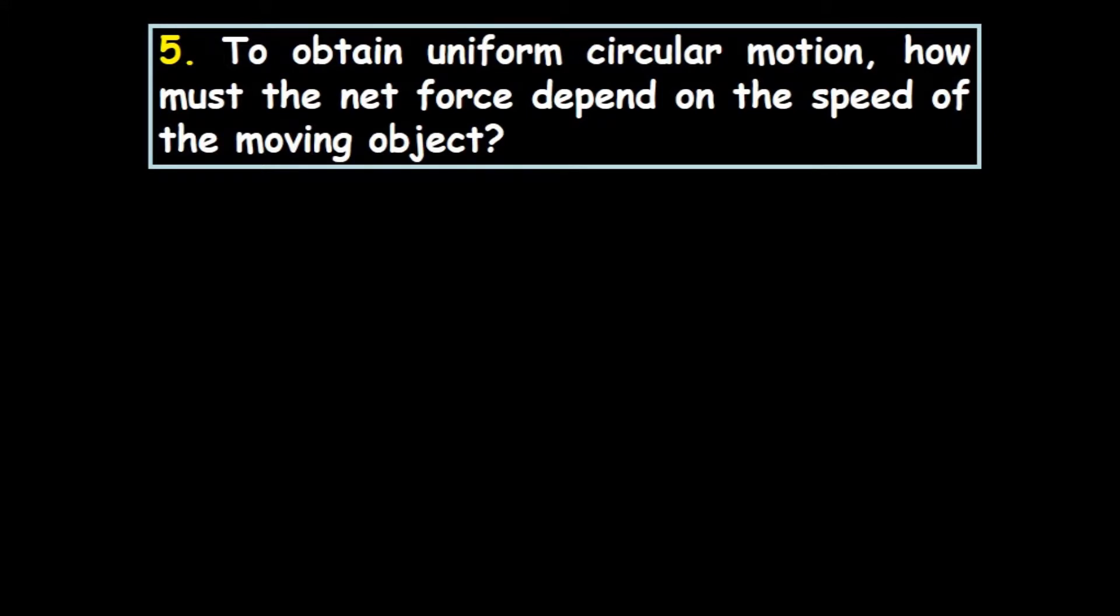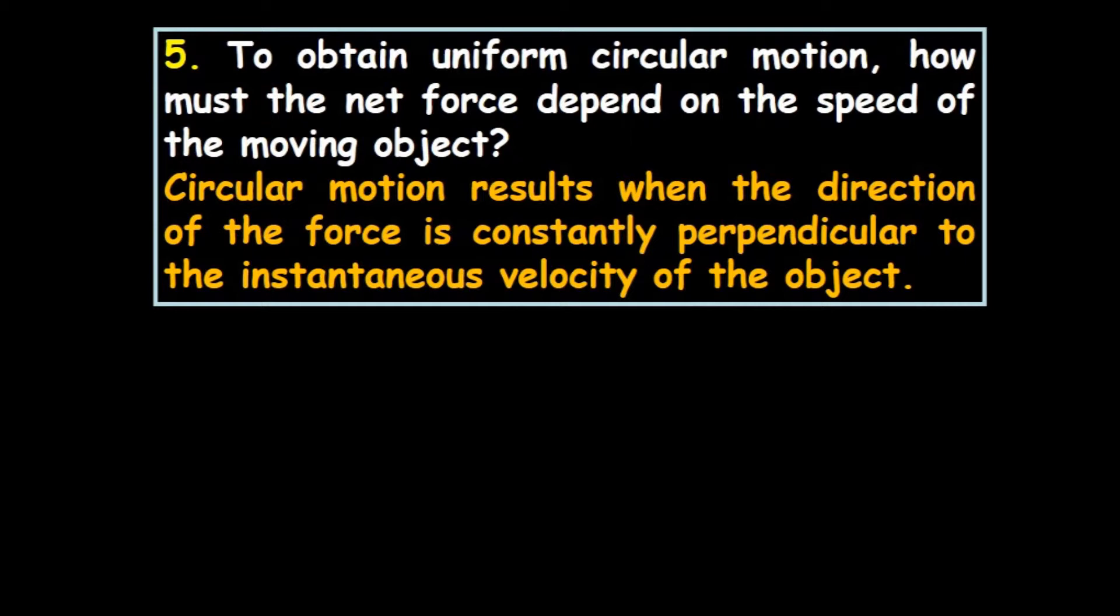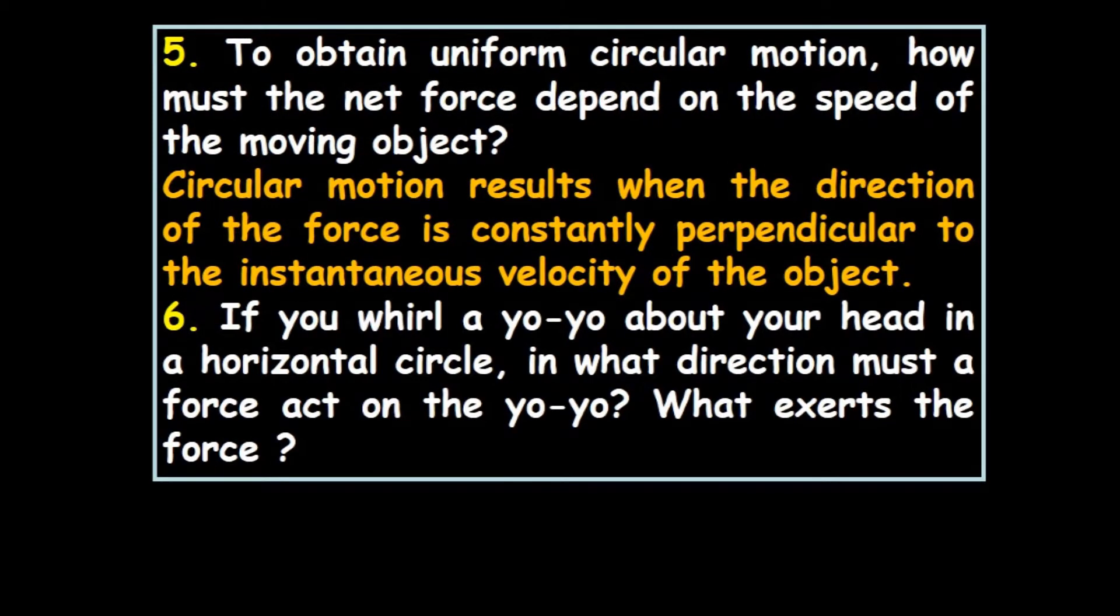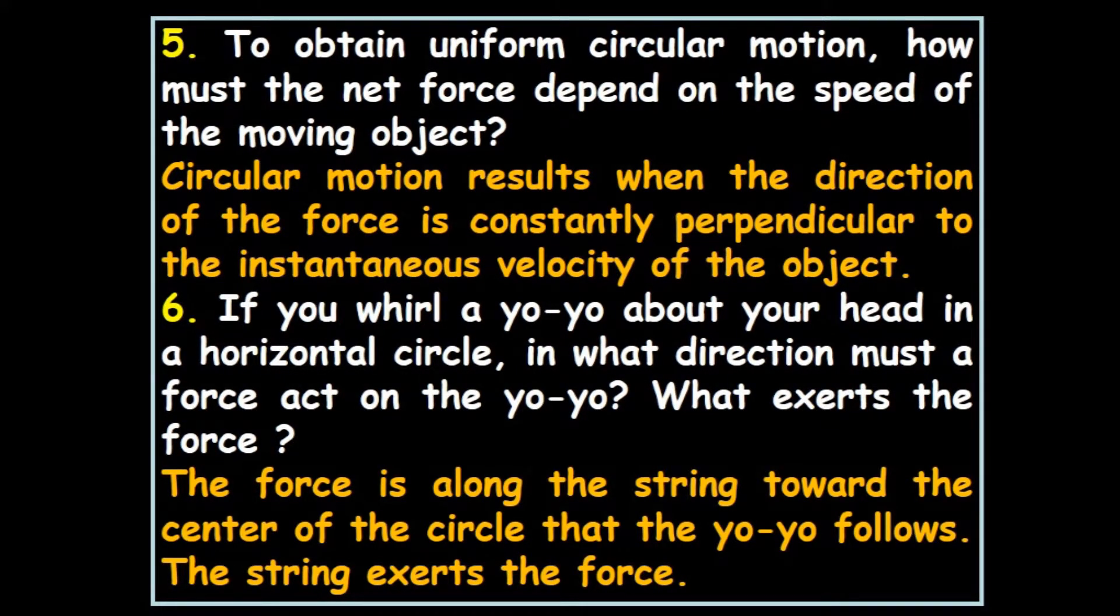To obtain uniform circular motion, how must the net force depend on the speed of the moving object? Circular motion results when the direction of the force is constantly perpendicular to the instantaneous velocity of the object. If you whirl a yo-yo about your head in a horizontal circle, the force is along the string towards the center of the circle. The string exerts the force.